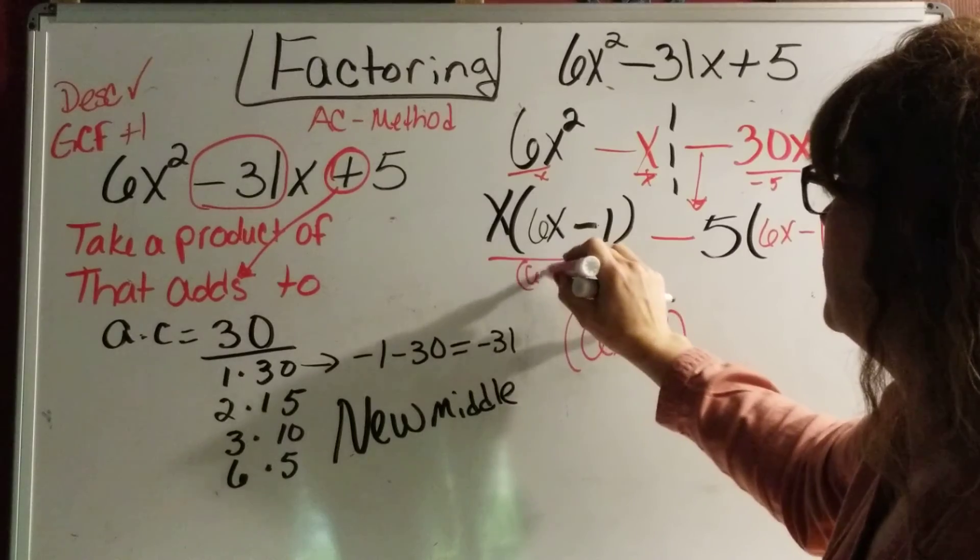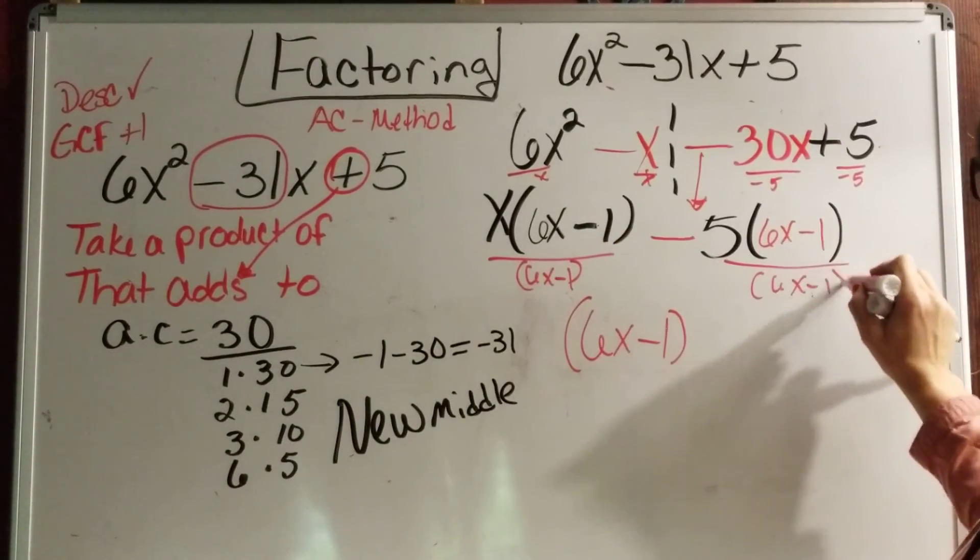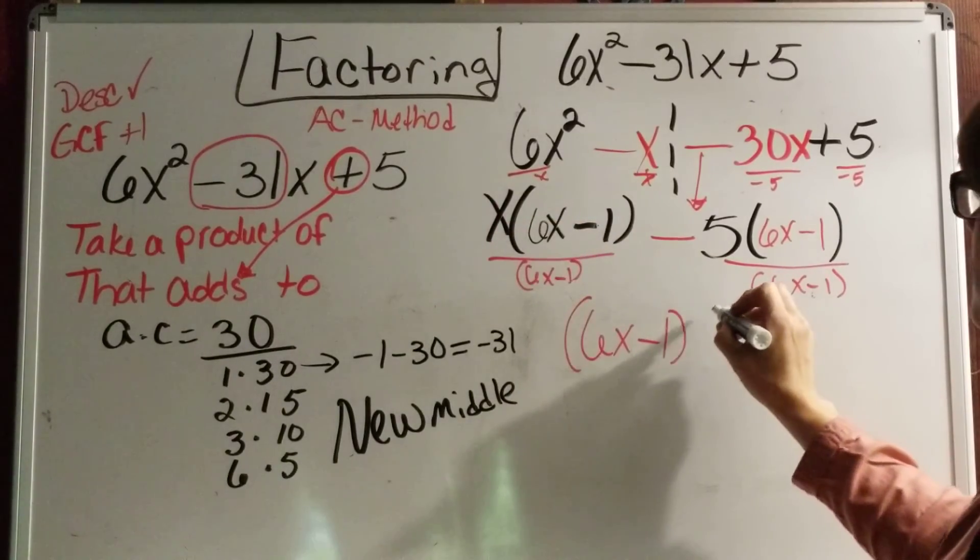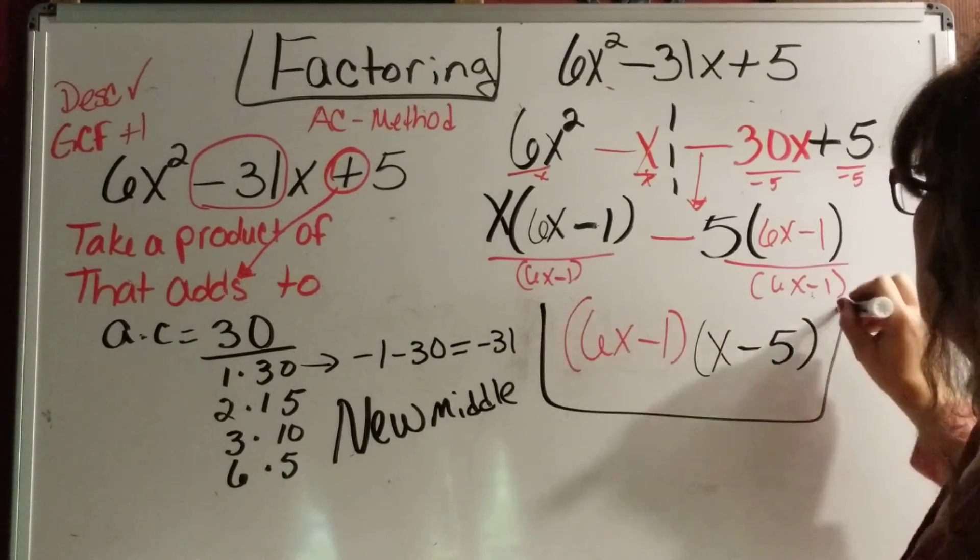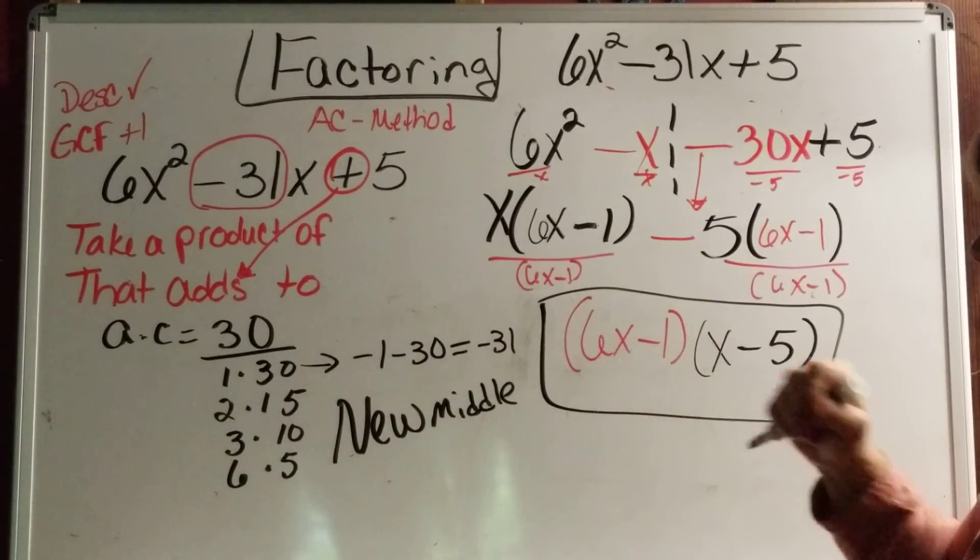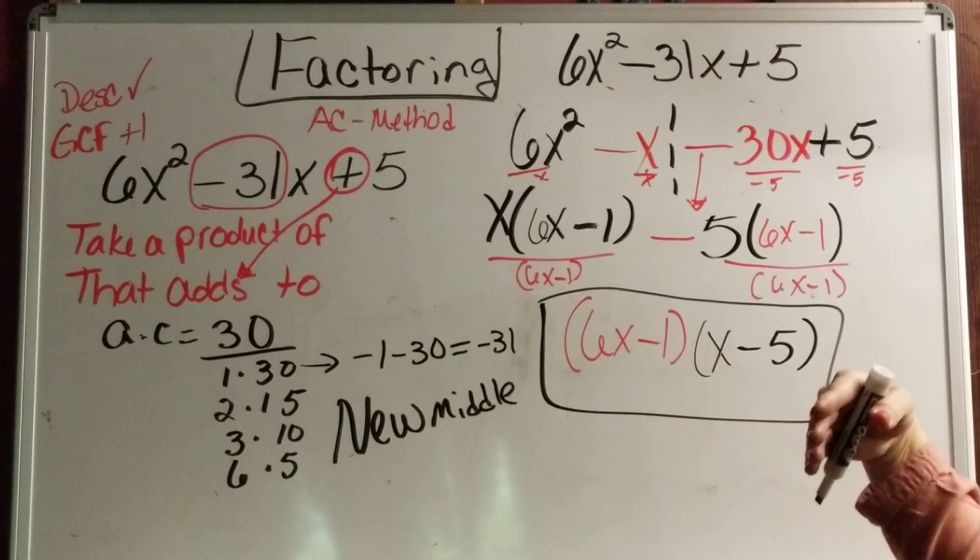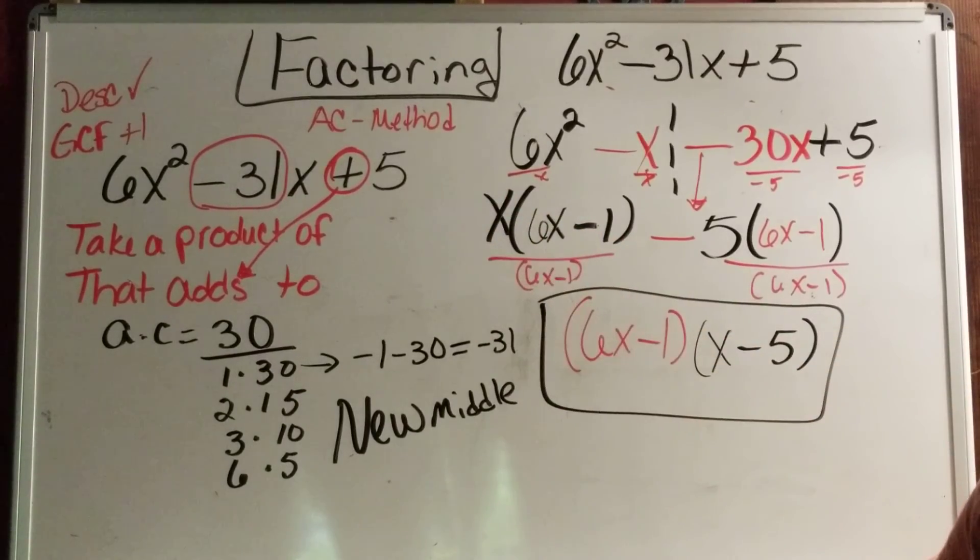And when I divide by it, that leaves me with x minus 5. And this is my answer. And I factored it down. And if I was to use the foil method or the distributing it back together, I would go back to where I started.